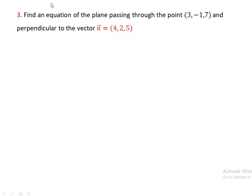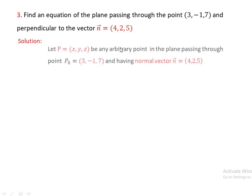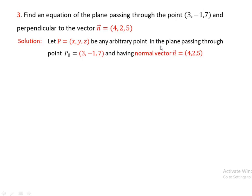Problem 3: find an equation of the plane passing through the point (3, -1, 7) and perpendicular to the normal vector n = (4, 2, 5). Let P(x, y, z) be any arbitrary point in the plane. Using the standard form of the equation of a plane, n is perpendicular to the vector P₀P, meaning n · P₀P = 0.